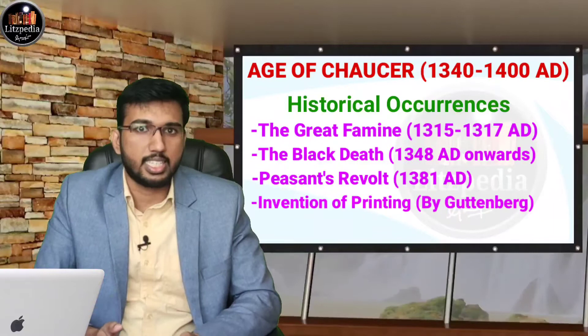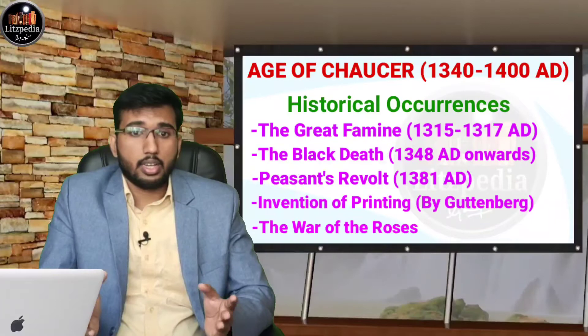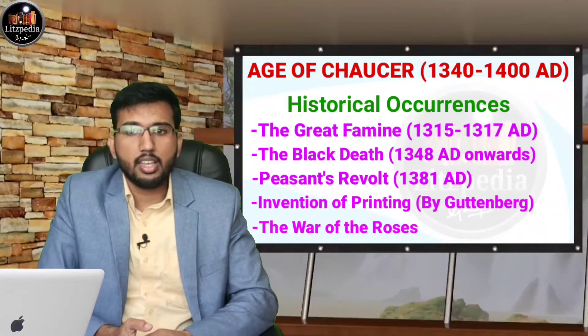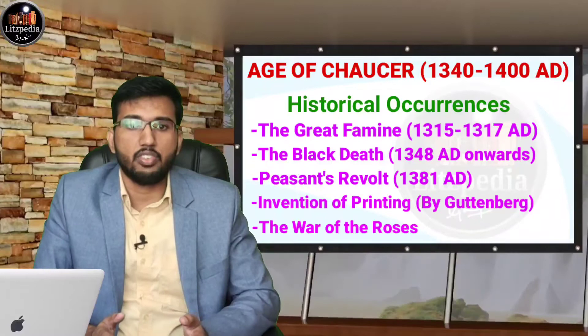The next historical event is the War of the Roses, which was a civil war between two branches of the Plantagenet dynasty: Lancaster and York. Lancaster's symbol was the Red Rose and York's symbol was the White Rose. It also resulted in the establishment of the Tudor dynasty.